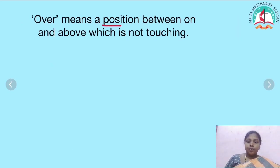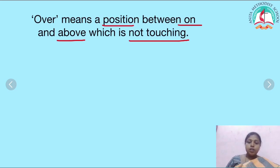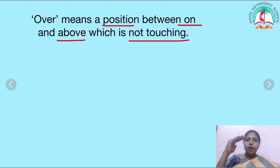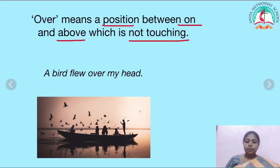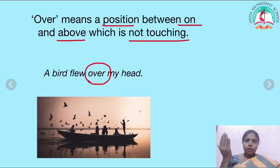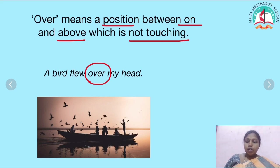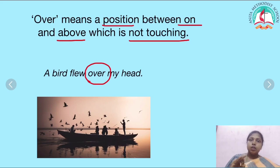Now let's see where to use over. Over means a position between on and above, which is not touching. Over is something which will not touch the object and is not out of reach — something in between. Example: a bird flew over my head. The bird is not touching my head and it is also not out of reach. So on is used where we can touch the object, above is something out of reach, and over is something in between that we should not touch.